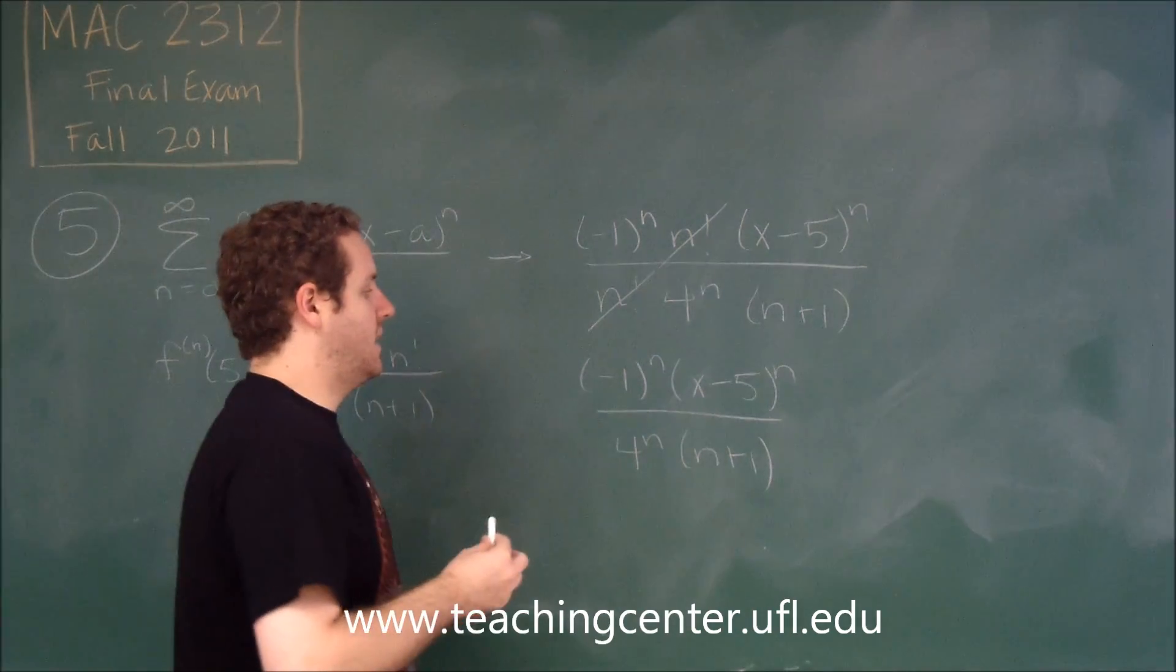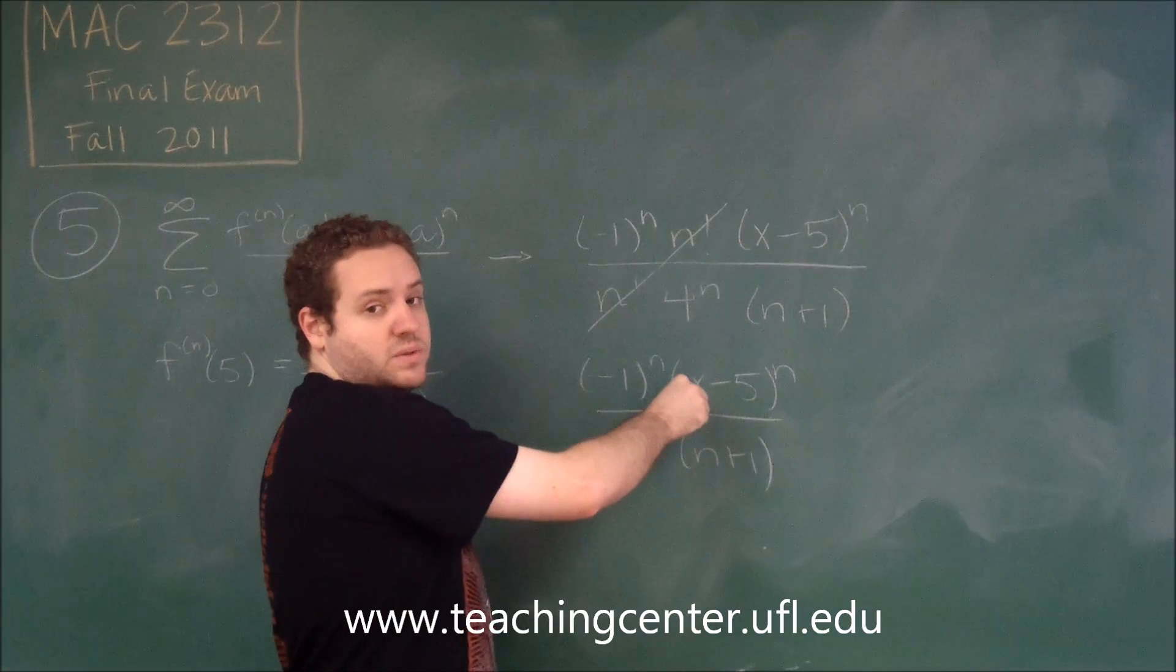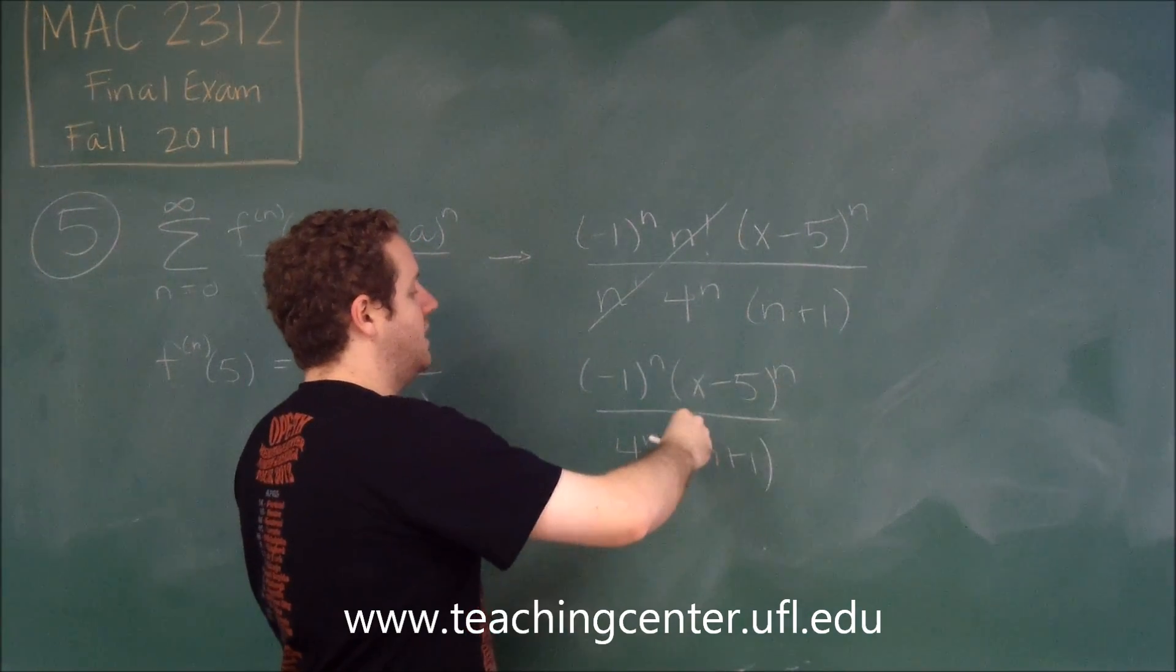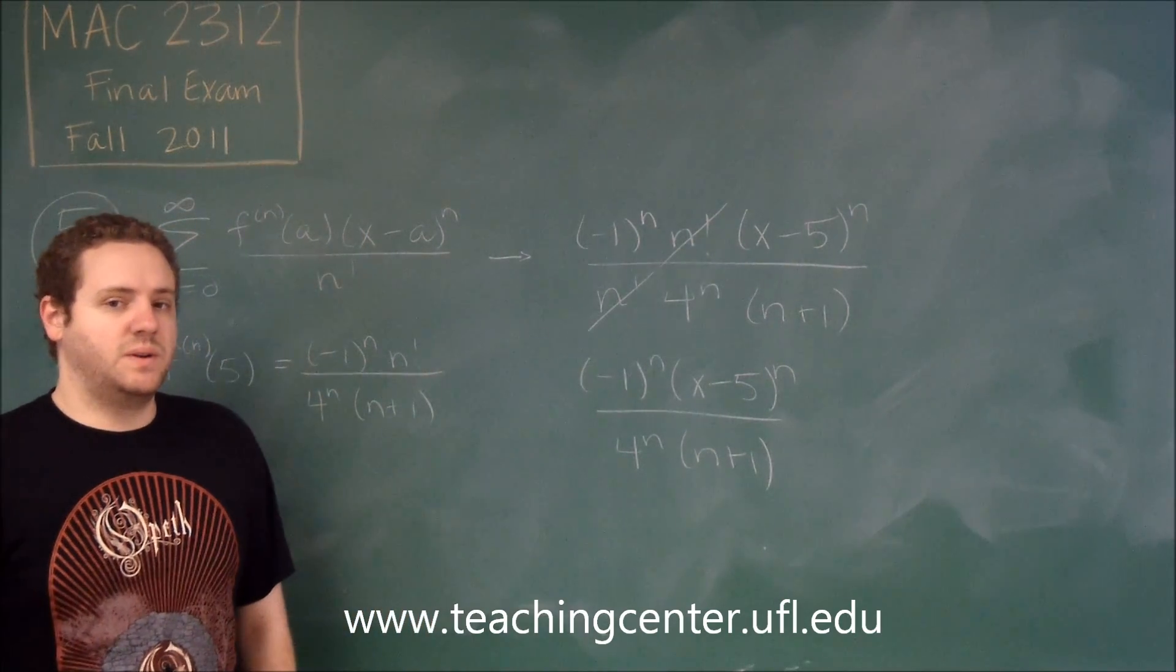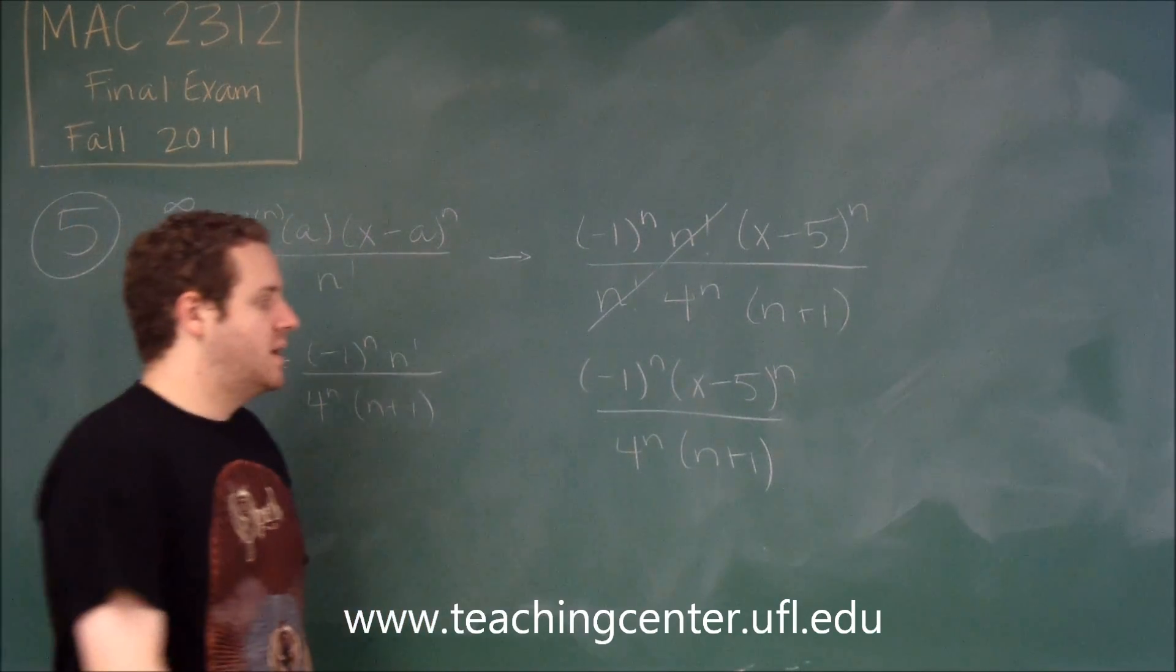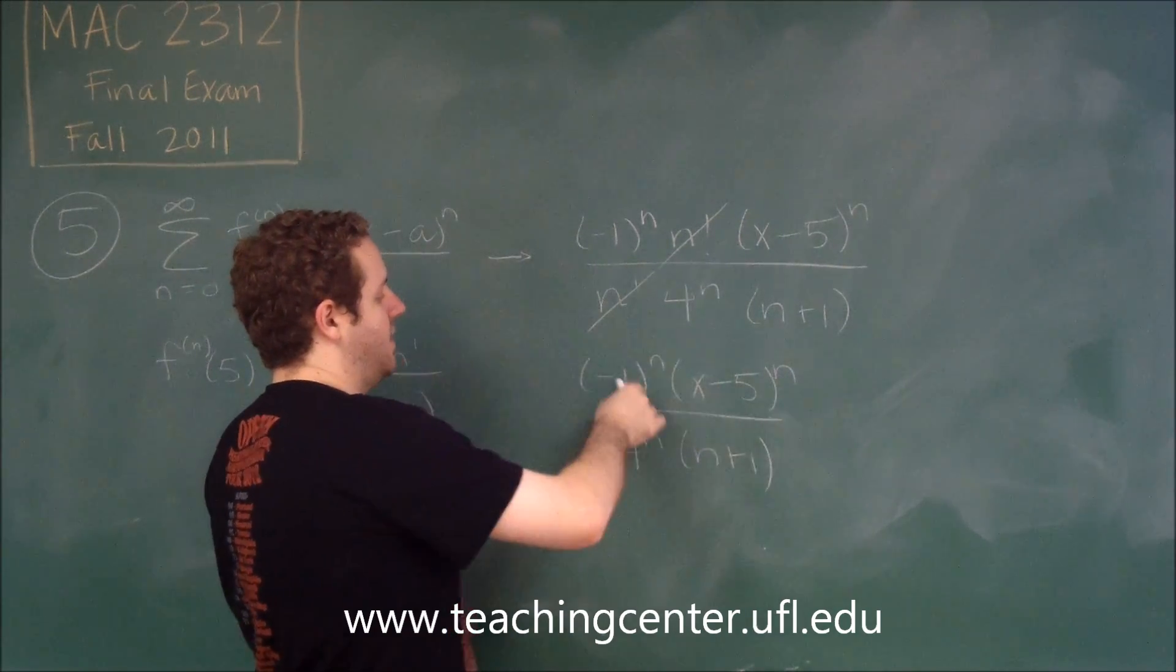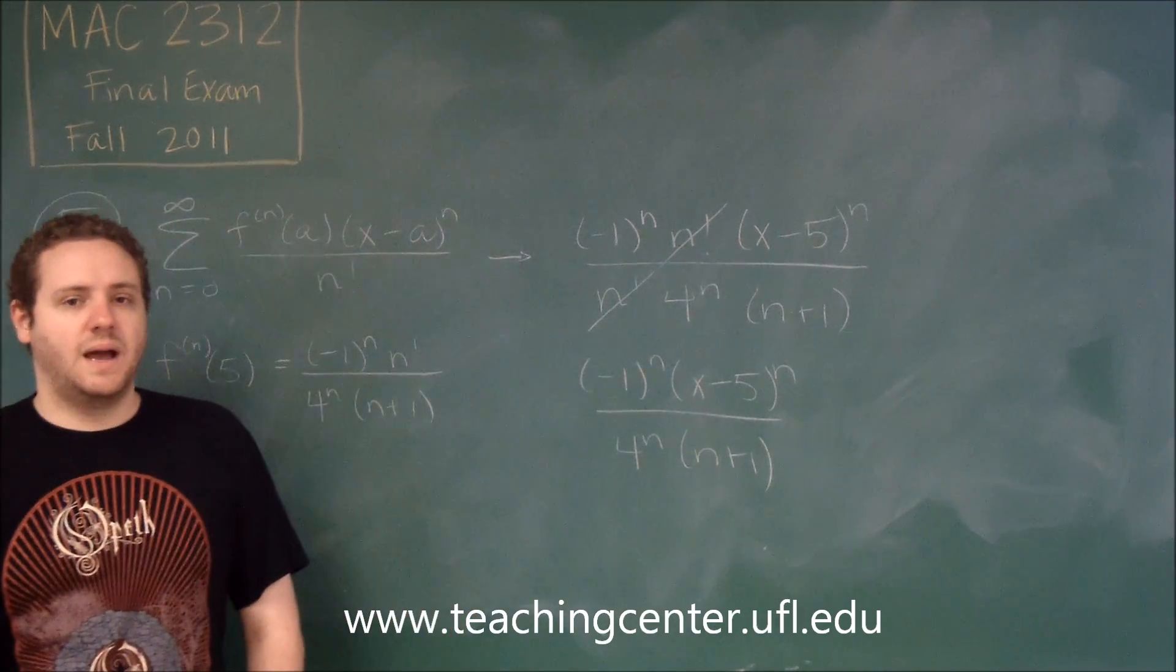So you can think of it like this. If we had x equals 9, this would be exactly 4 to the n, these would cancel out and we'd get some series that we'd need to figure out whether it converges. If it was negative 4 to the n, again, these would cancel out, we'd get another alternating, something else would happen.